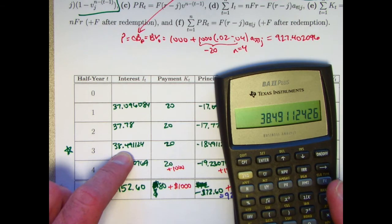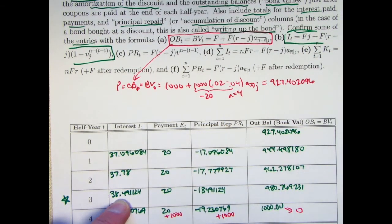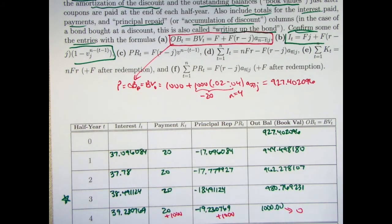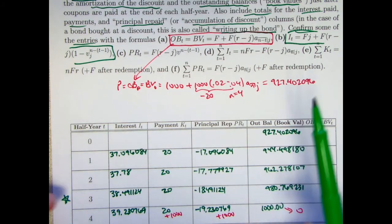So we confirmed formula B at t equals 3. So that could be useful if you had a problem where it asks you to figure out the interest paid at time 3.